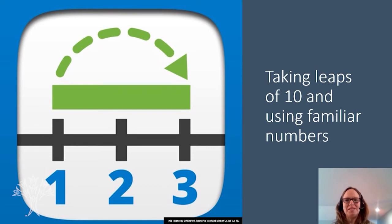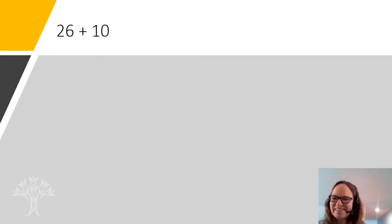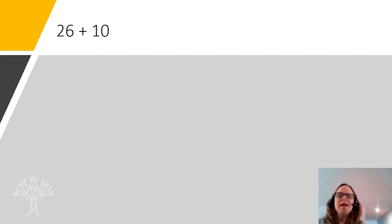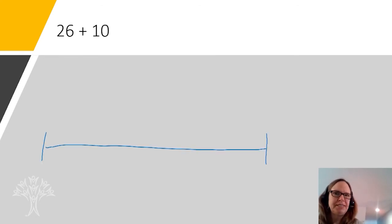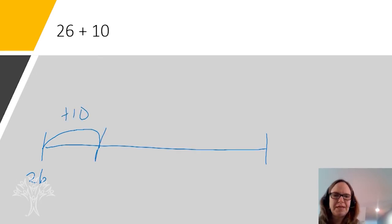Today's lesson, we're going to be looking at the number line and taking leaps of 10 using familiar numbers. If you want, you can always access the Math Learning Center apps — they have a number line there where you can practice some of this on your own. All right, second graders, here we go. If we have 26 plus 10, is that something you can do in your head? If we do this on a number line, if we start at 26 and we take a jump of 10, what number do we get to? Did you say 36? If you did, you are correct.